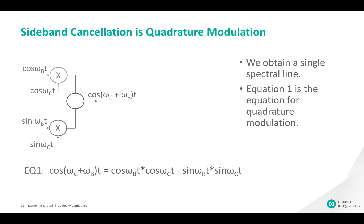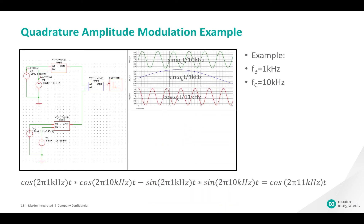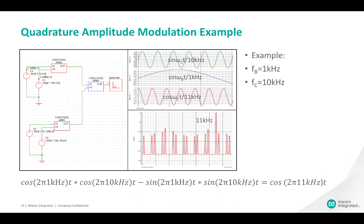This is quadrature amplitude modulation as shown in equation 1. Let's look at a real-world example of QAM using the same input frequencies we've been working with. The circuit on the left implements the quadrature modulation equation. On the top right, the inputs of the upper mixer are shown in the time domain. At the bottom of this section, you see the 11 kilohertz modulated signal in the time domain. The modulated signal is shown in the spectrum at the bottom right. You can see that the modulated signal occupies a single sideband of 11 kilohertz. We were able to eliminate the other sideband without using a filter.